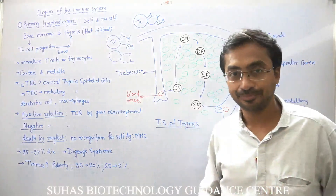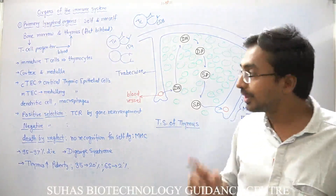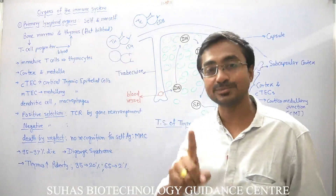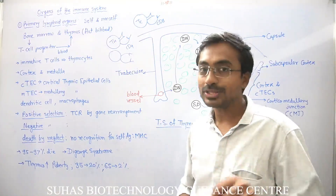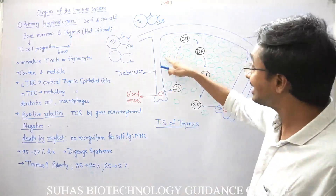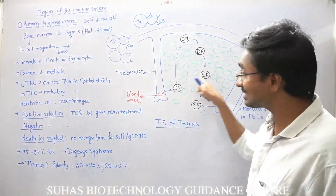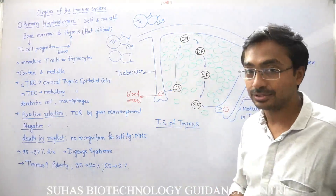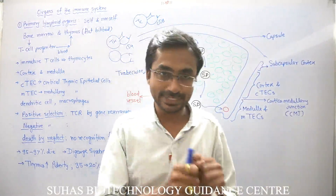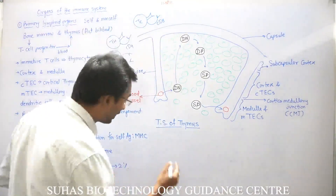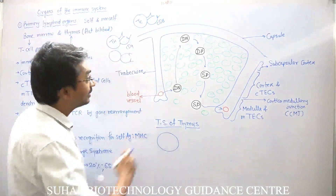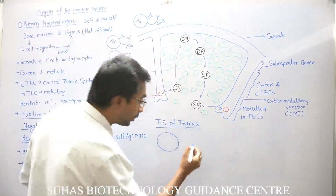During this complete process, most of the T-lymphocytes are going to die. This is because their primary education does not take place properly. What happens is that epithelial cells will interact with the immature T-lymphocytes.